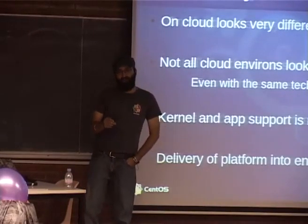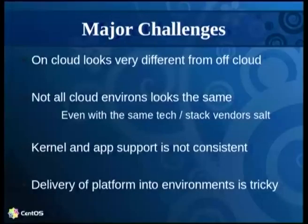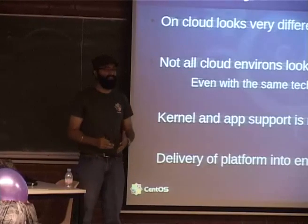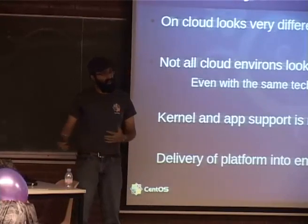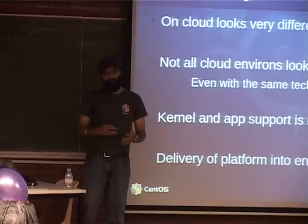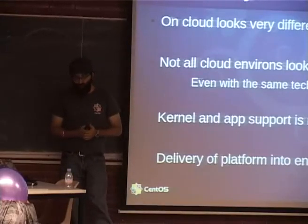On cloud and off cloud don't really look the same. You can have a VM on your machine, virtualized infrastructure, or a cloud — and to me those three things look very different. Virtualized infrastructure is classic VMware-type perspective; cloud is classic AWS where you're scaling your app rather than your instance. They look just different enough to merit specific consideration.